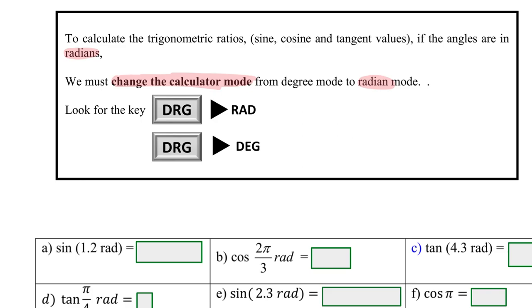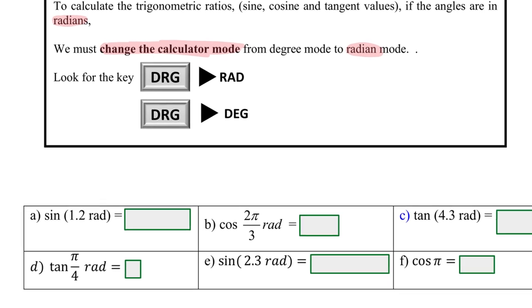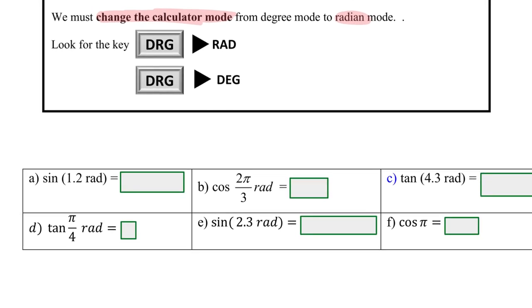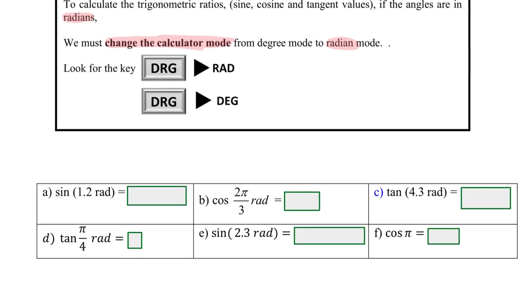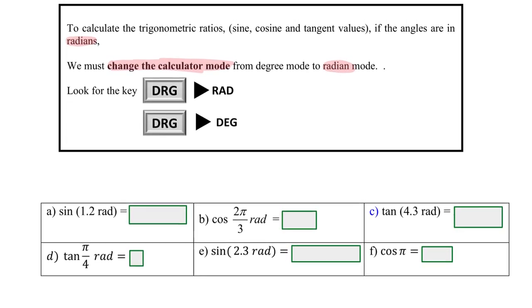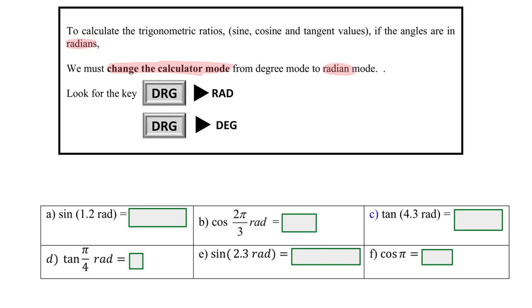This is very important because if the calculator mode is in the wrong mode, then that will affect all our answers. For the following example, when you key into a calculator, whether that calculator is in degree or radian mode does affect the answers.